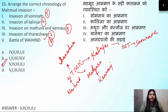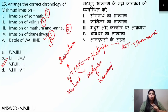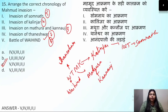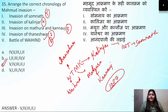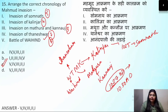Question number 15 correct answer is option C — five, four, three, two, one. Remember WTMK and then Somnath. After that, for one last time he came to Bharat in 1027 AD, and his death was in 1030 AD.